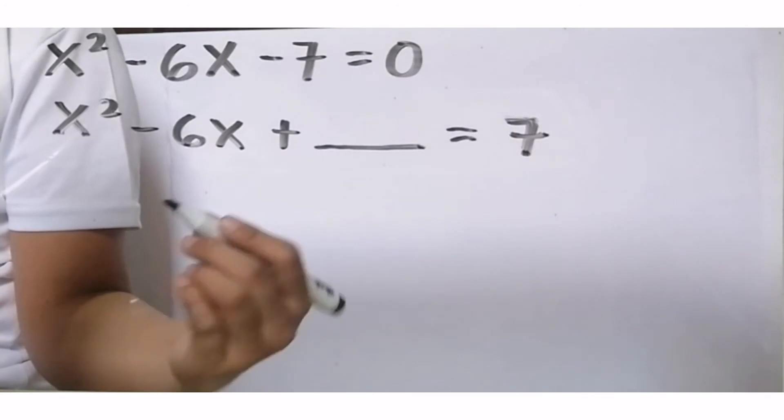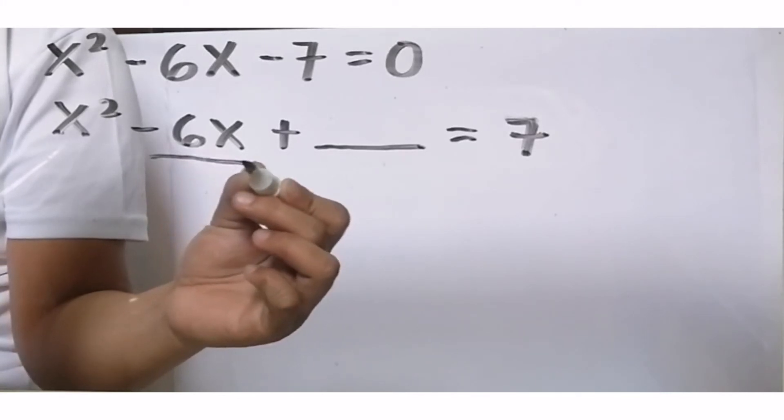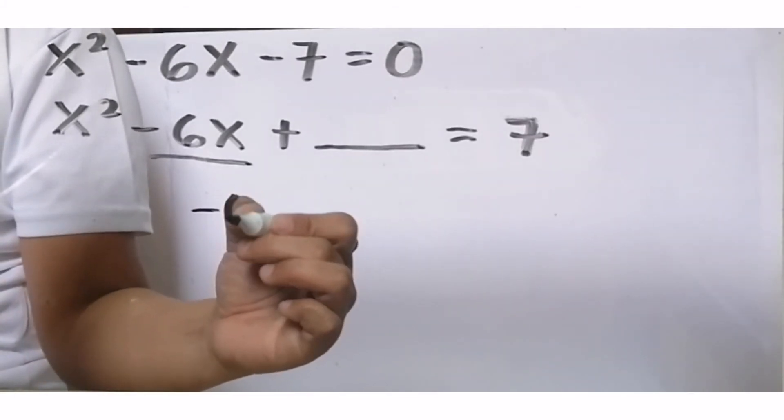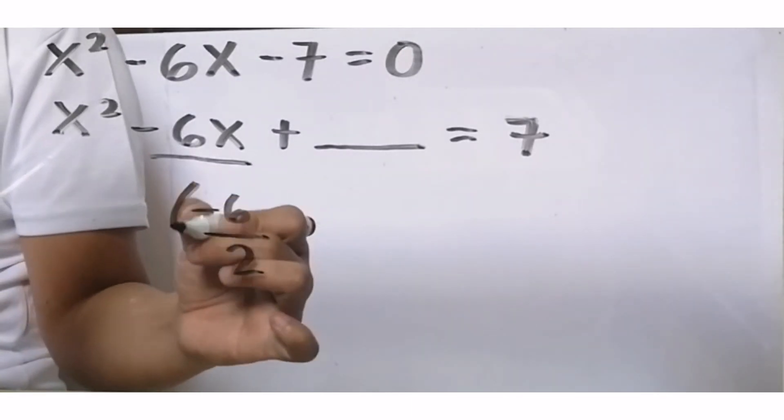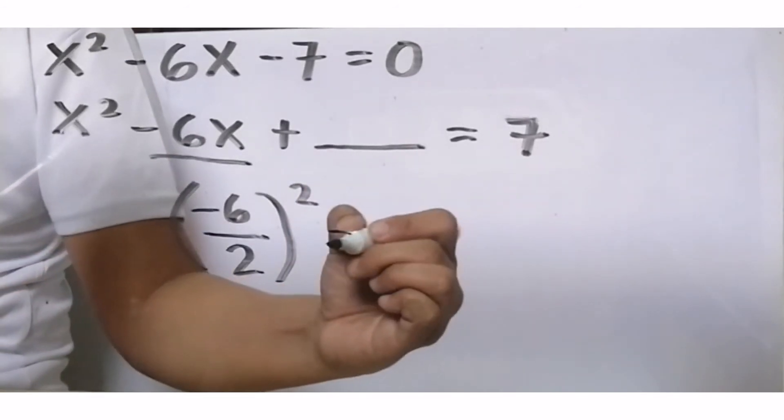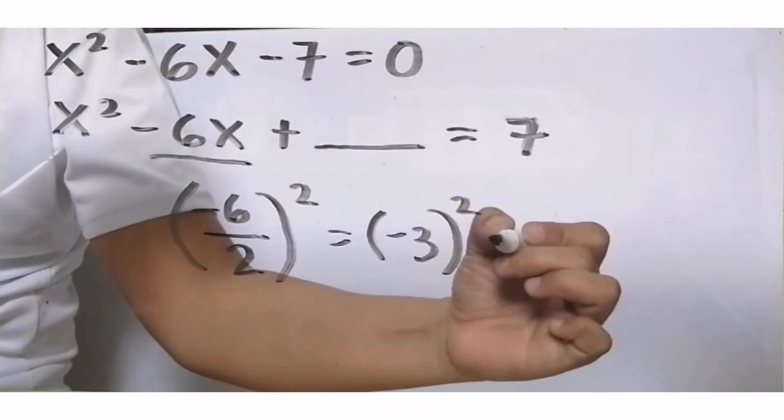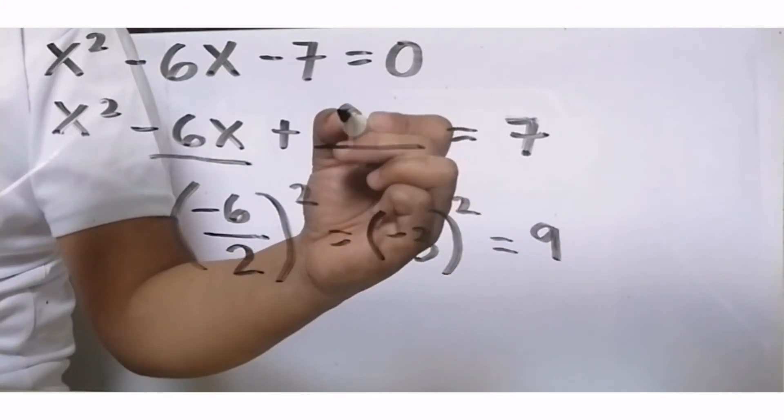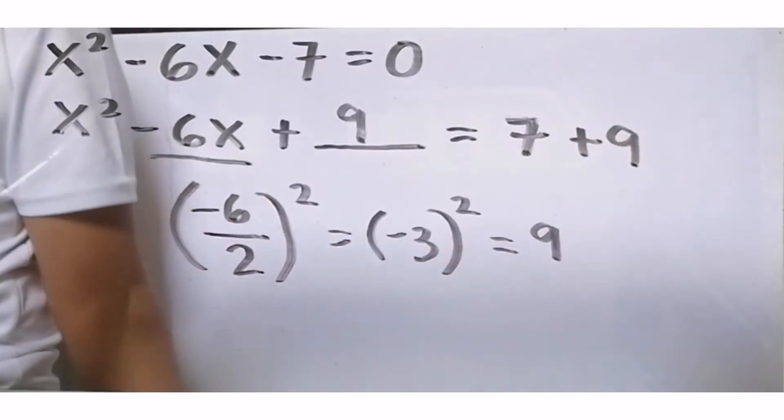Next process is what we did before. Check the middle term. What is its numerical coefficient? Take note, include its sign. We have negative 6. This negative 6 must be divided by 2. Then later, we will square the quotient. What is negative 6 divided by 2? That is negative 3. Square it. Square of negative 3 is positive 9. Now, put positive 9 in our blank from earlier. Then add positive 9 also to the right side of the equation.